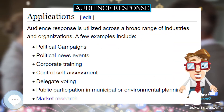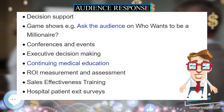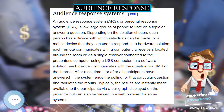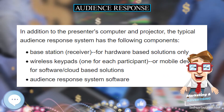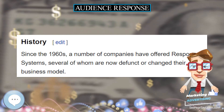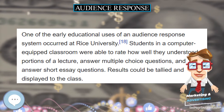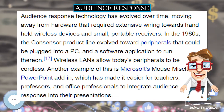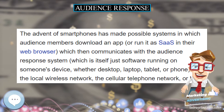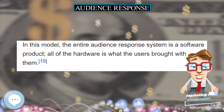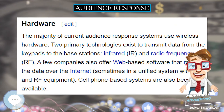The majority of current audience response systems use wireless hardware. Two primary technologies exist to transmit data from keypads to base stations: infrared (IR) and radio frequency (RF). A few companies also offer web-based software that routes data over the internet, sometimes in a unified system with IR and RF equipment. Cell phone-based systems are also becoming available. IR audience response systems — the oldest of these technologies — are better suited for smaller groups. IR uses the same technology as a TV remote and is the only one of the four technologies that requires line of sight between the keypad and receiver, which can fail due to interference when signals from multiple keypads arrive simultaneously.